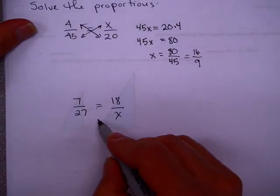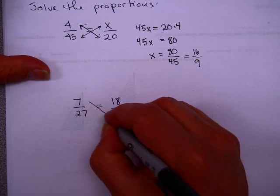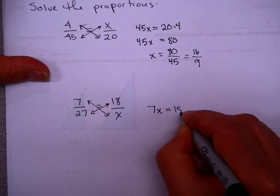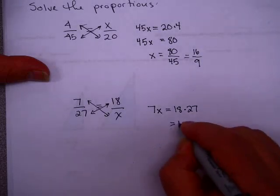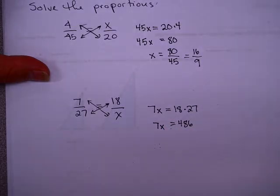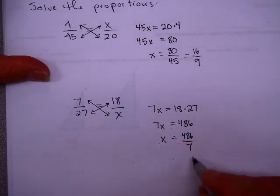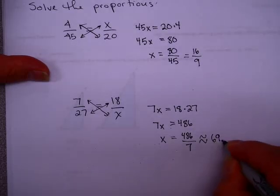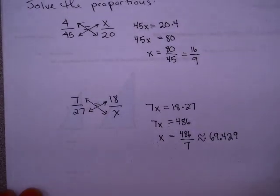Why don't you try this one on your own, stop the video now, and restart when you are ready. Here I have 7 times x and 18 times 27. You might need your calculator to do 18 times 27. If you do 18 times 27, you will get 486 equals 7x. Divide by 7 and you get 486 over 7. Pay close attention to the instructions. They may ask for a decimal. If they asked for a decimal, rounded to 3 decimal places, 69.429.